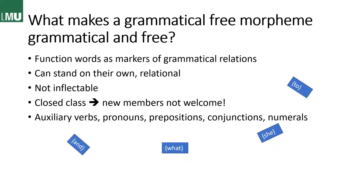Then we also have grammatical free morphemes. These are function words which mark grammatical relations. They can also stand on their own, and they're rather relational — they don't give you any lexical input; they just put the lexical information into perspective. And they are not inflectable — looking at examples like 'and,' 'what,' 'she,' 'too,' you can't inflect any of those. They are a closed class with no new members. The English language has the grammatical free morphemes it needs, and it's very hard to introduce new ones.